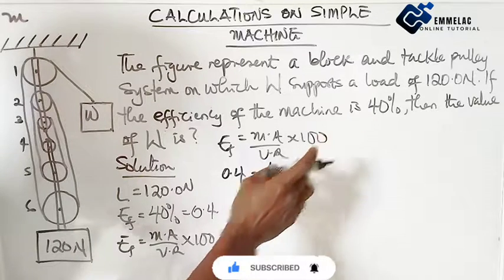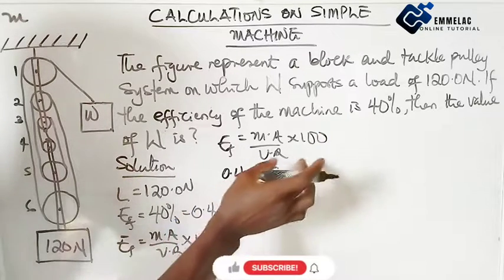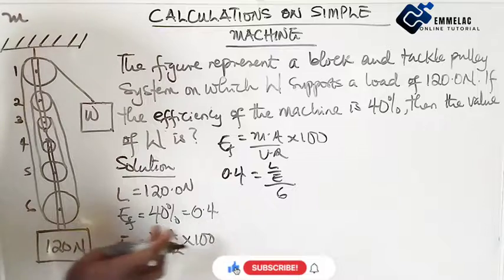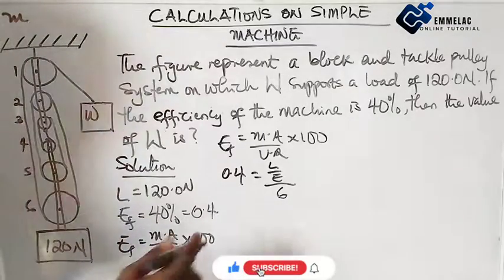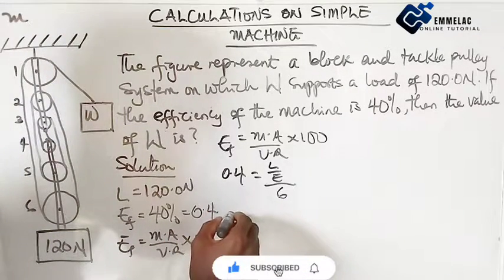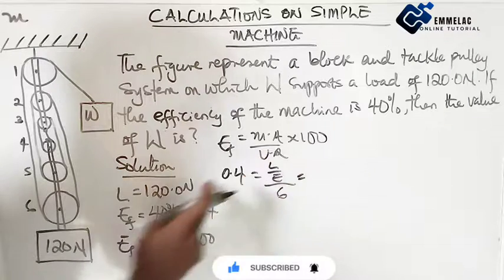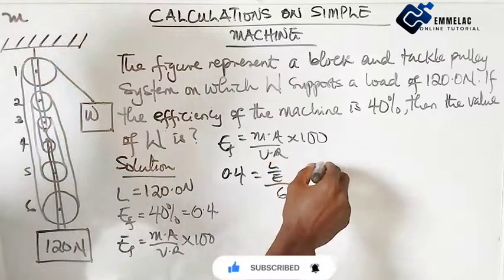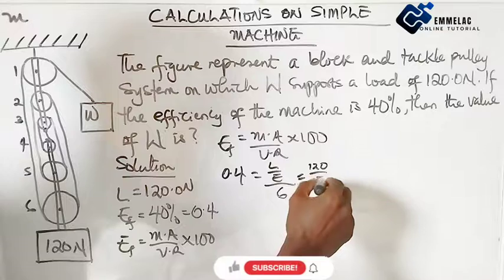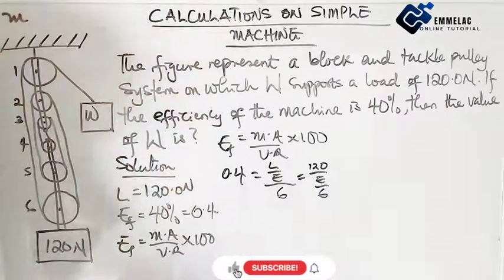This 100 here is not relevant since I've used the percentage here. Our load here is 120, so this is 120 over effort over 6.